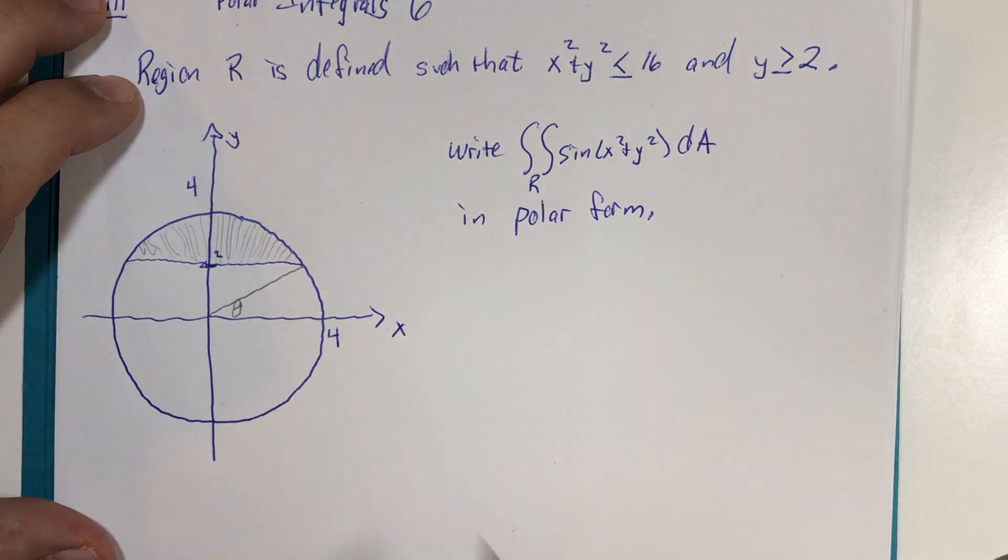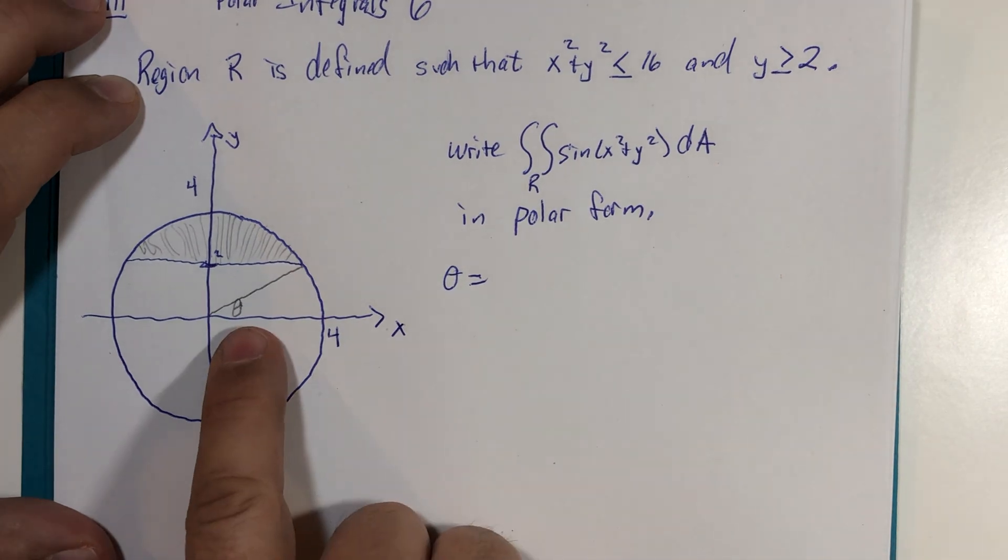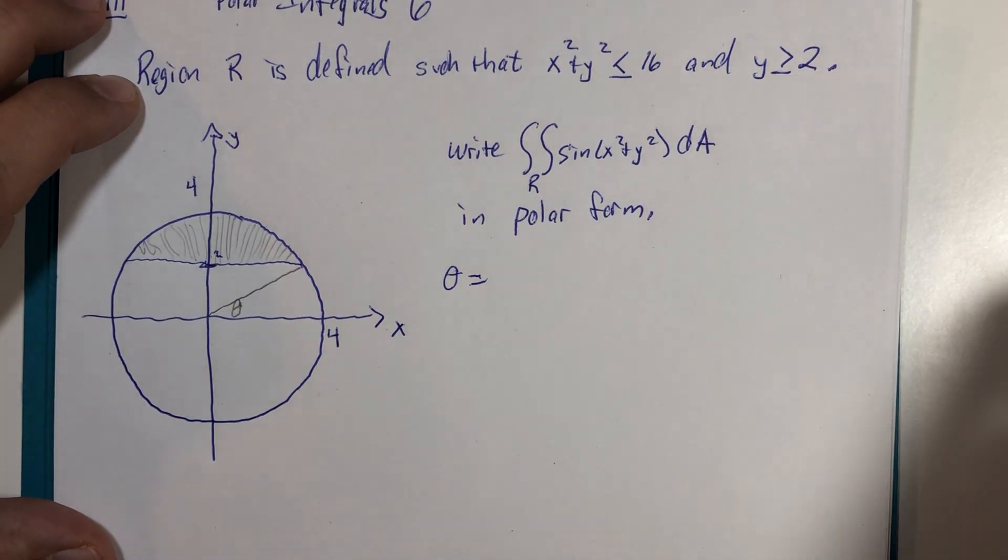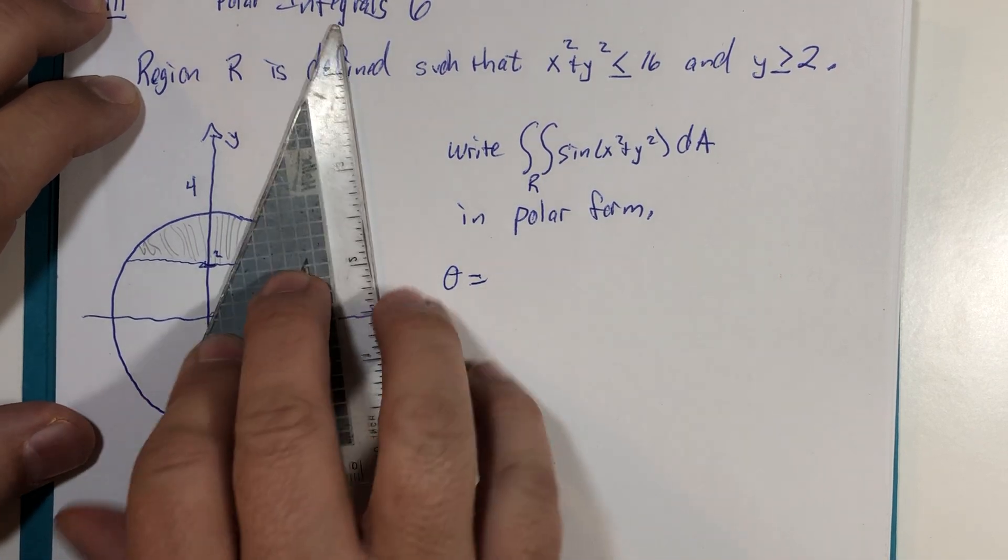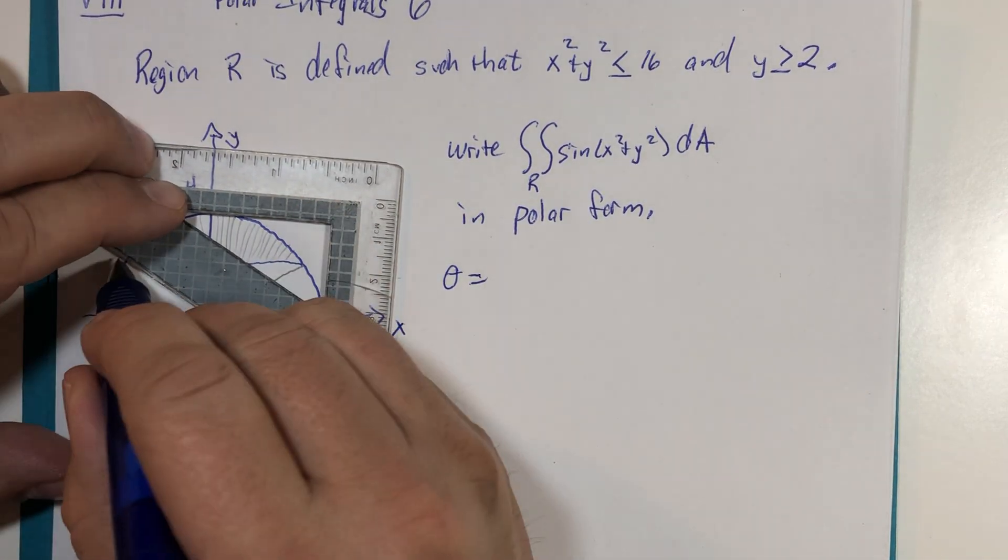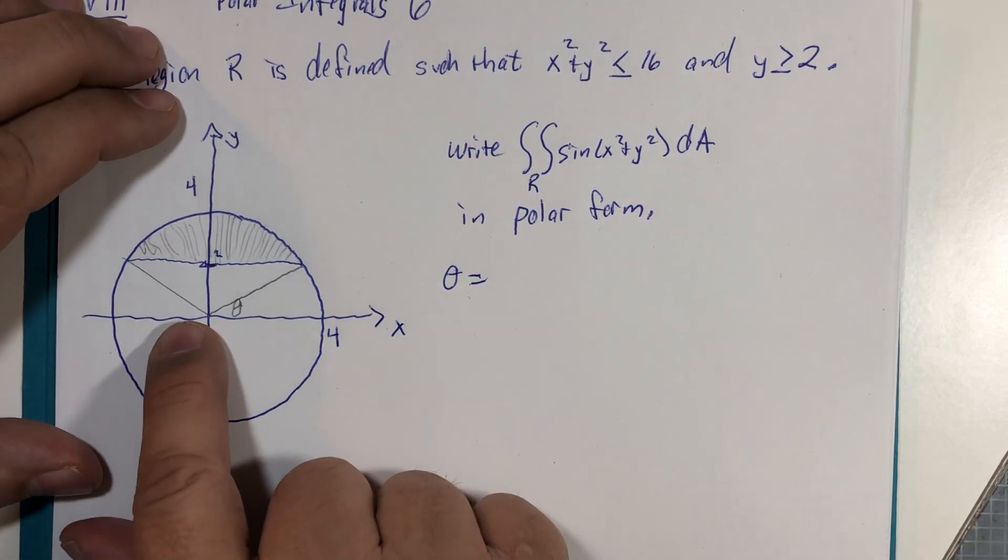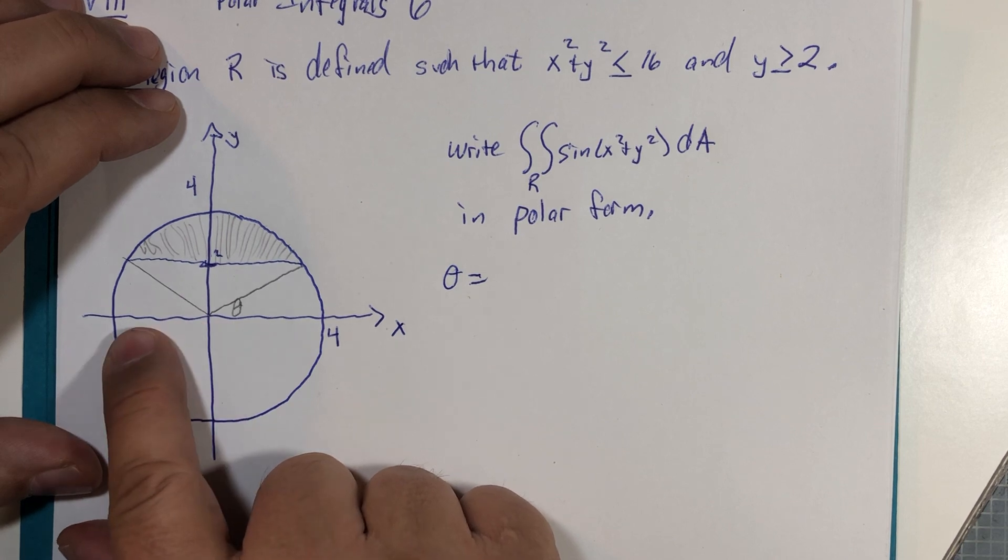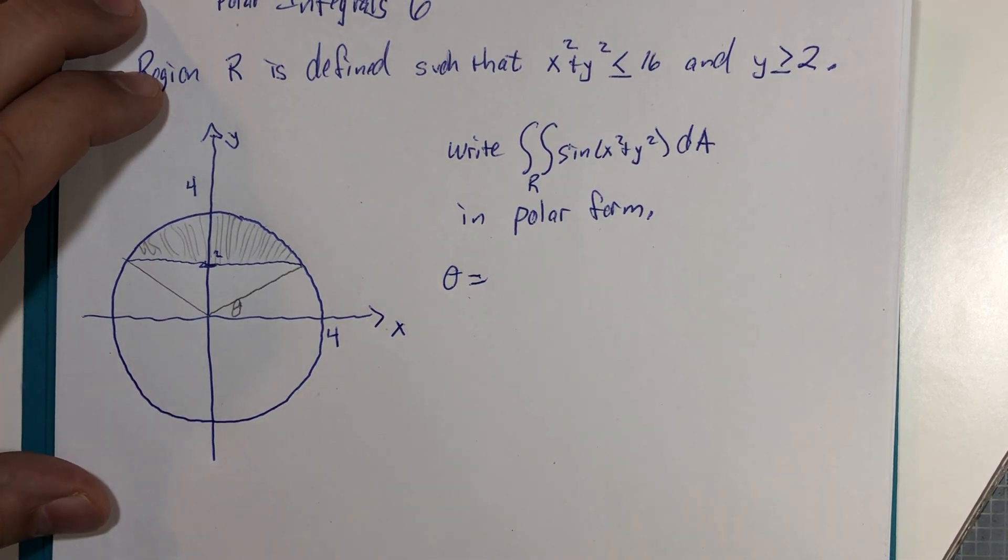So theta is going to start here at whatever this particular value is, and it's going to keep going until we end up over here. Once we discover this theta, this value over here will be pi minus that theta. We still have to determine if this theta is going to be one of our nicer angles or if it'll be more interesting. There's so many ways we can view this, but let me just drop this one in. From here to here is the radius of the circle, which is 4 units. From here to here is 2 units.